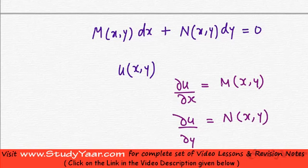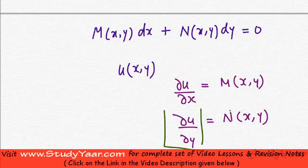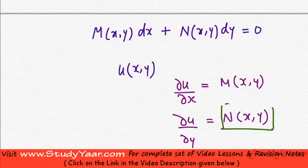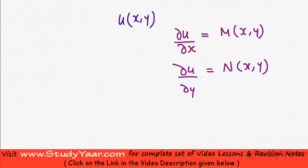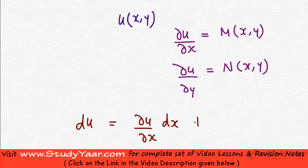We are assuming that there is a function u such that its partial derivative with respect to x is M(x,y), and its partial derivative with respect to y is N(x,y). Now, from knowledge of partial derivatives, du = (∂u/∂x)dx + (∂u/∂y)dy.